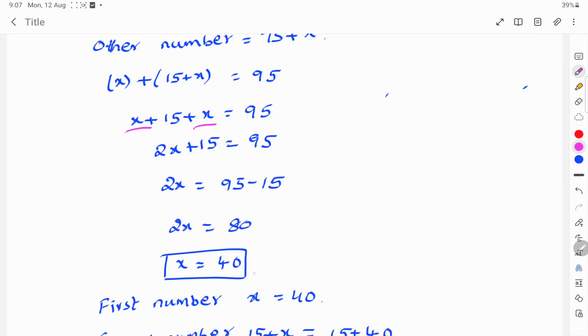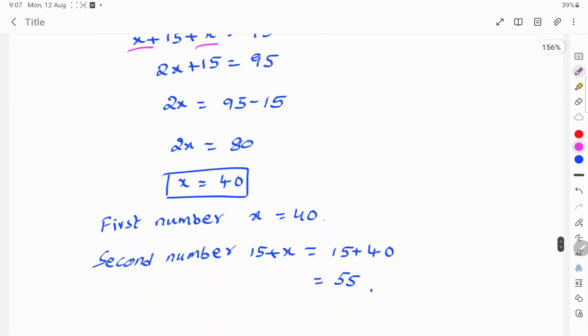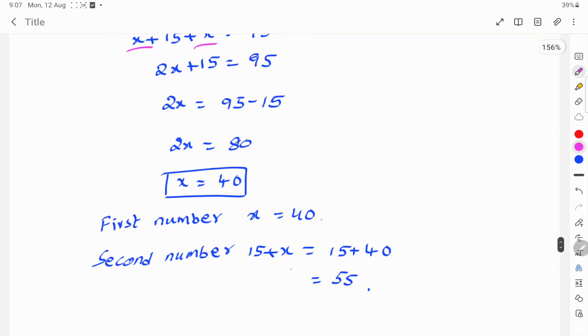x is equal to 40. The first number is 40. The second number is 15 plus x, which equals 15 plus 40, which is 55. So the first number is 40 and the second number is 55. This is the solution.